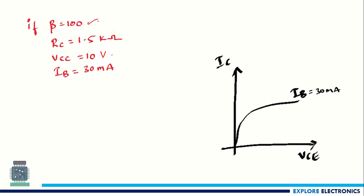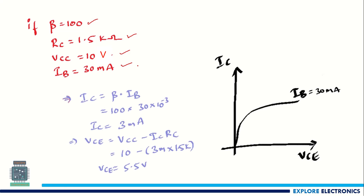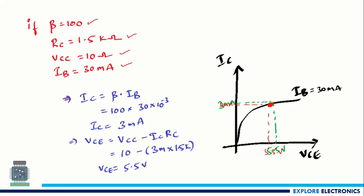For a numerical example: β = 100, RC = 1.5 kΩ, VCC = 10 V, and IB = 30 µA. We need to find IC and VCE. Since IC = β·IB, IC = 3 mA. Then VCE = VCC − IC·RC = 10 − (3 mA × 1.5 kΩ) = 5.5 V. So the operating point is at IC = 3 mA and VCE = 5.5 V, as marked on the output characteristics. This is how operating point problems are solved for any biasing technique.